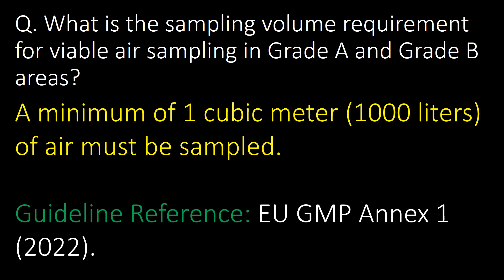What is the sampling volume requirement for viable air sampling in Grade A and Grade B areas? A minimum of 1 cubic meter, i.e. 1000 liters of air, must be sampled. Guideline reference: GMP Annex 1.